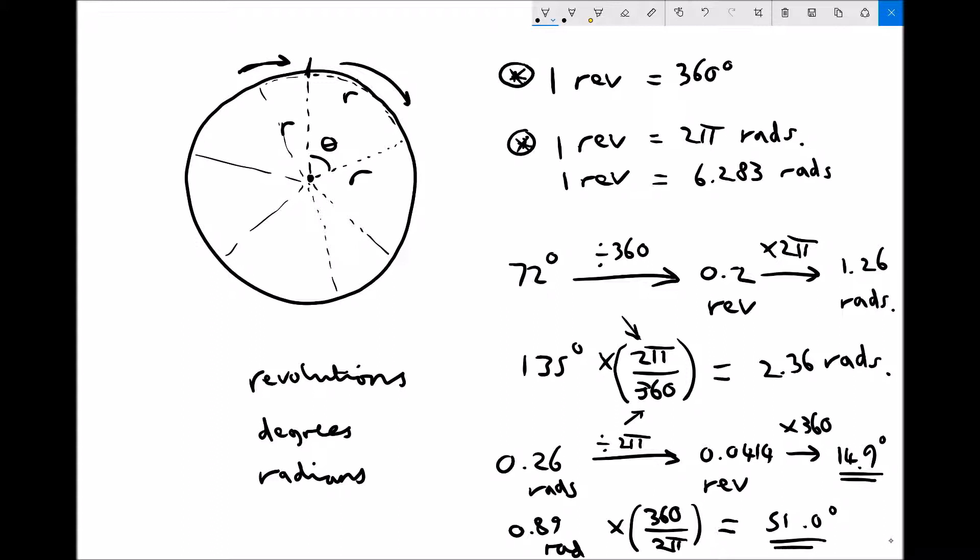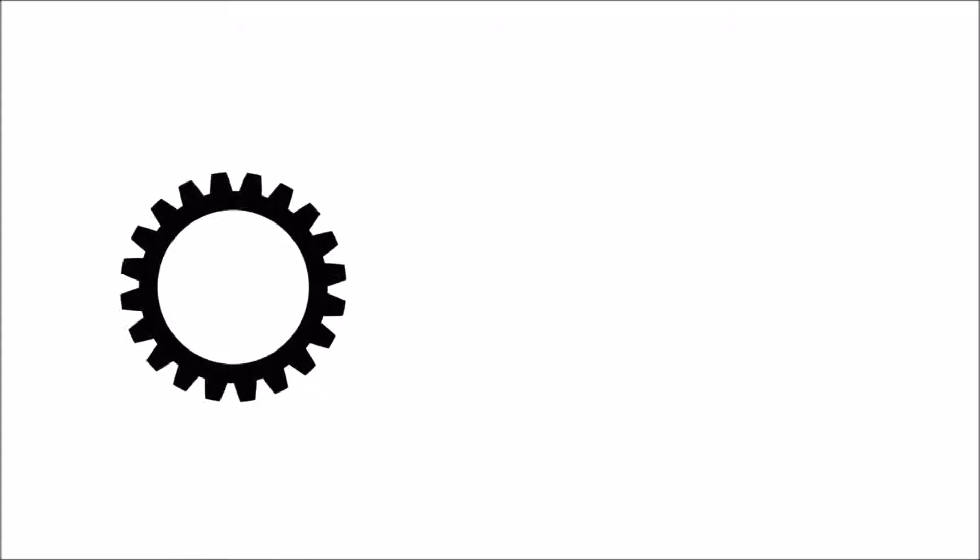Once again we can either go from radians to revolutions and then revolutions to degrees, or we can just use our conversion factor of times 360 over 2 pi. Both methods link to our facts at the top here. One revolution is 360 degrees and one revolution is also 2 pi radians.